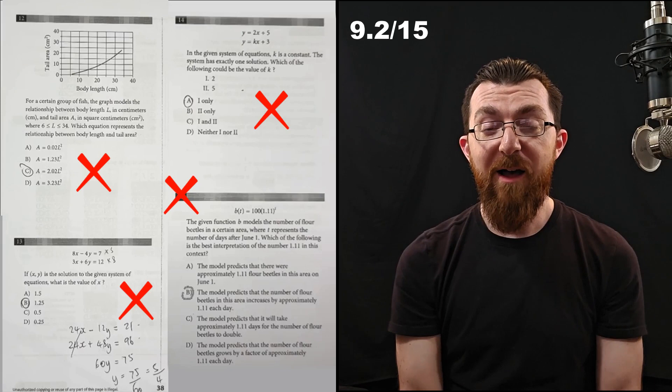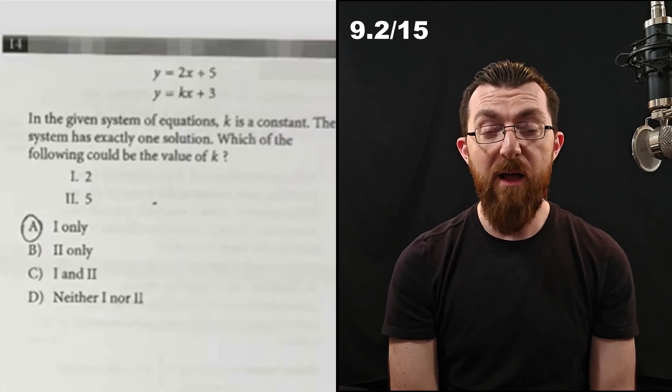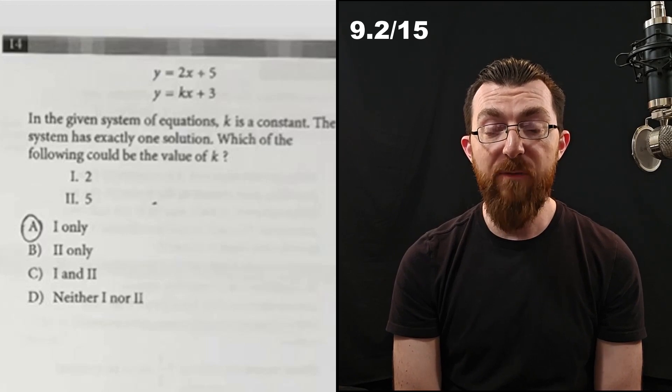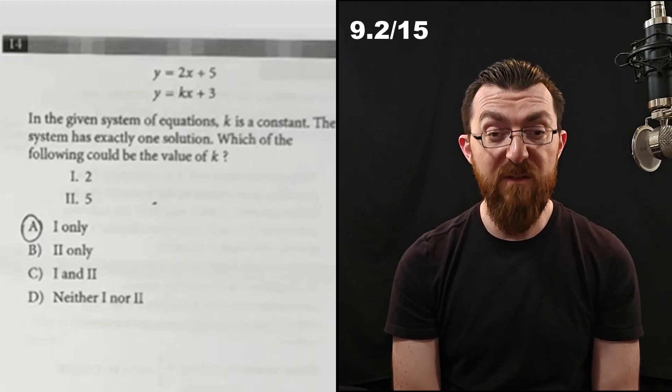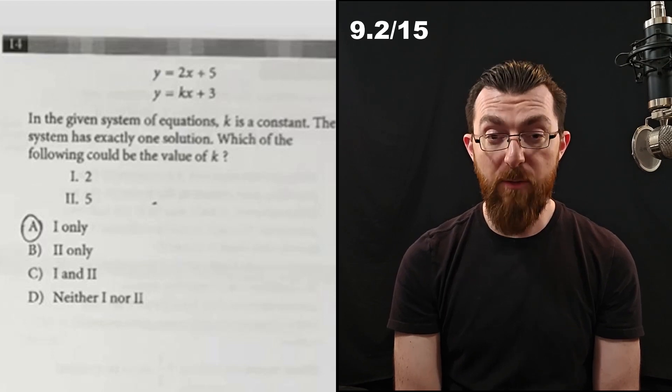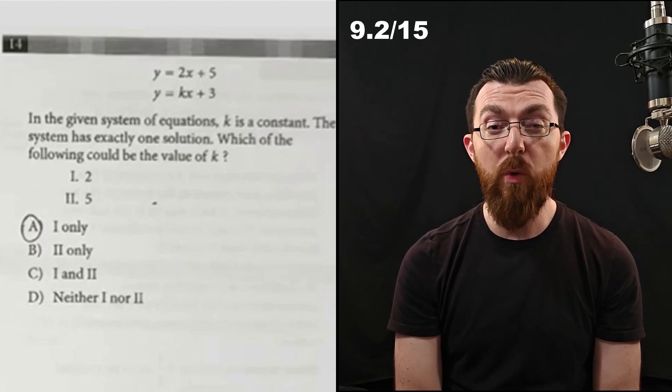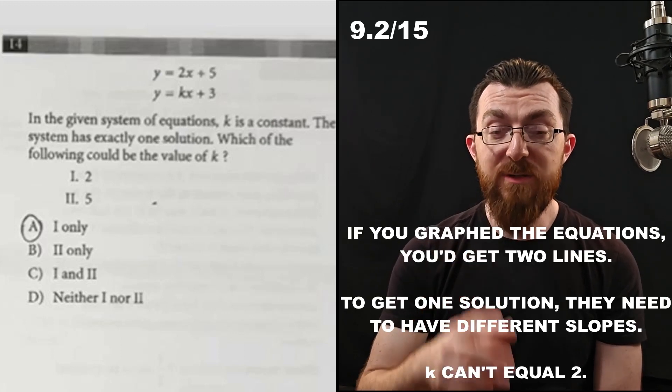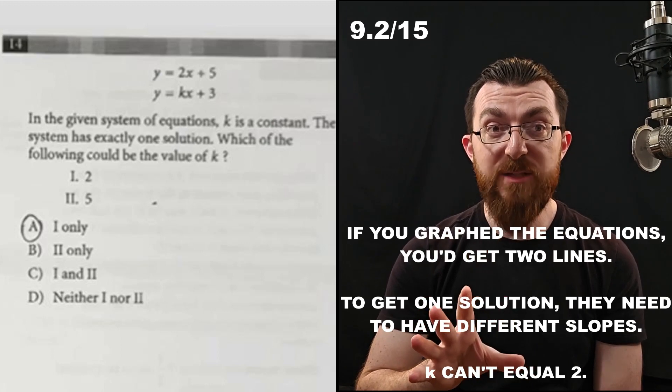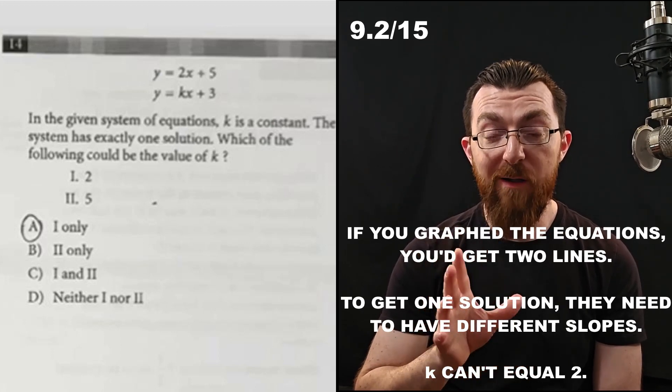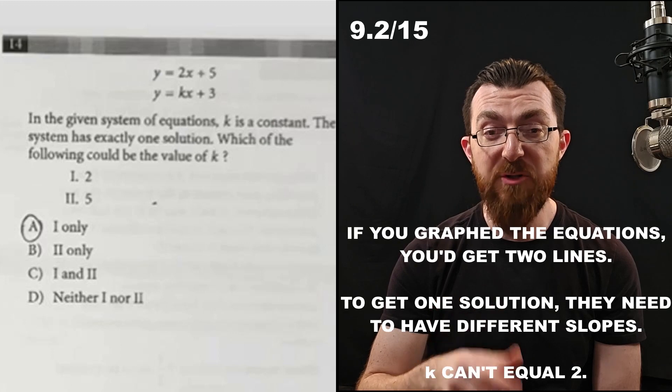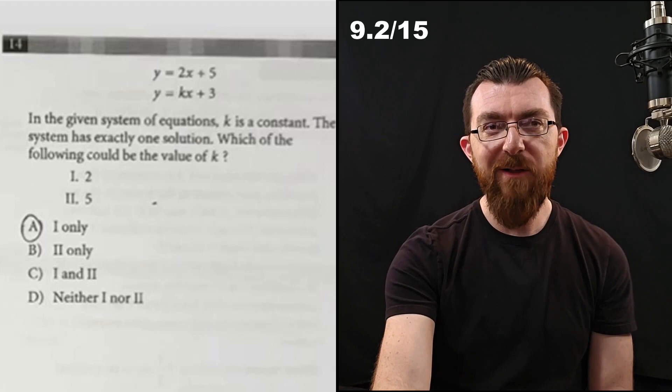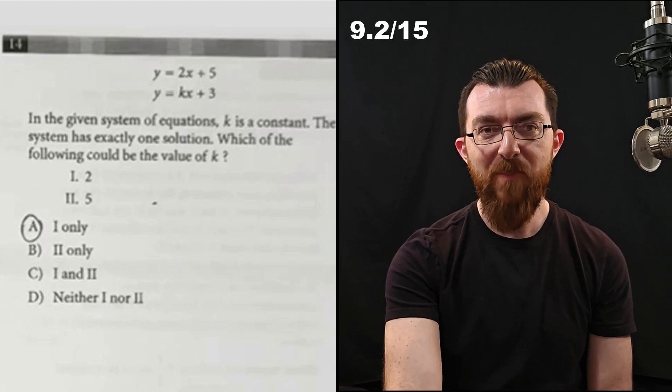Okay, the next problem is another system of equations, and it's asking about the value of K. In that bottom line, that would be the slope. If you were to graph those equations, they would be two lines. In order to have exactly one solution, those lines can't have the same slope. So that's why two won't work. It has to be five, and so that's actually letter B, two only, right? K cannot equal two and result in exactly one solution.